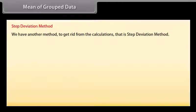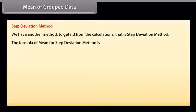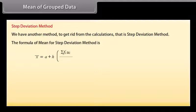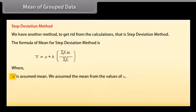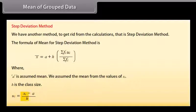Step deviation method: We have another method to avoid large calculations — the step deviation method. The formula is: x-bar equals assumed mean a plus h multiplied by summation of fi·ui divided by summation of fi, where a is the assumed mean, h is the class size, and ui equals (xi minus a) divided by h.